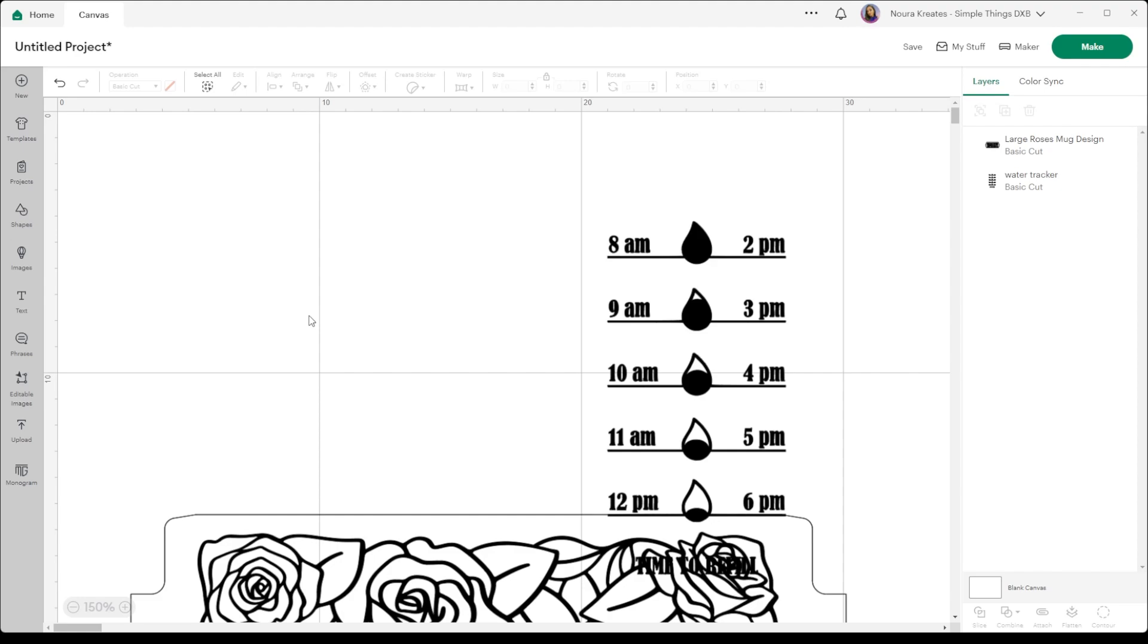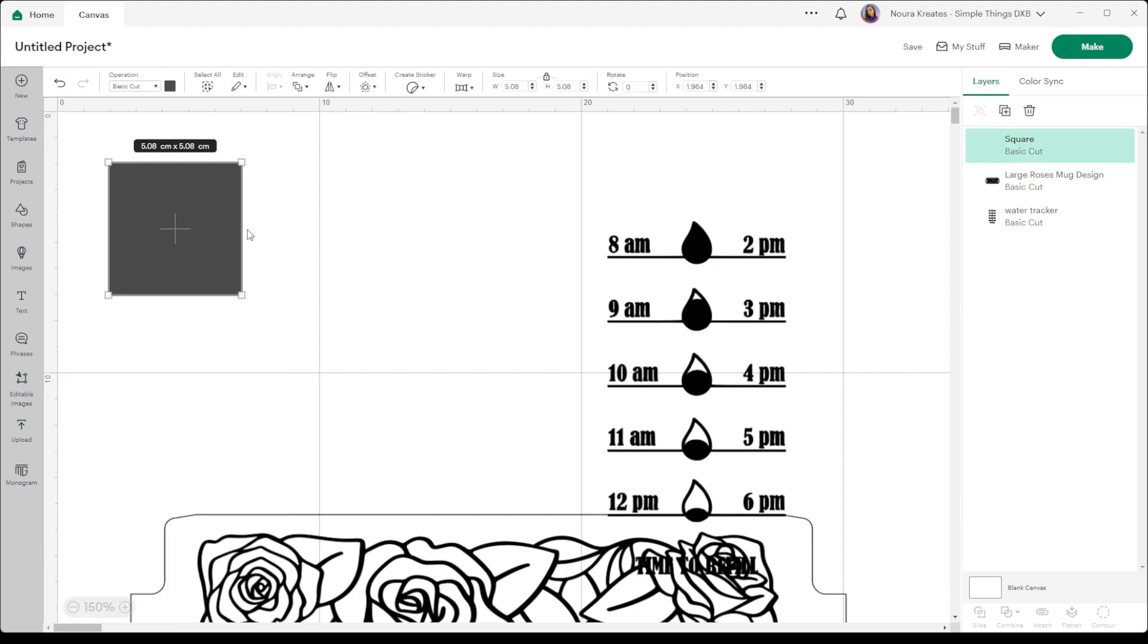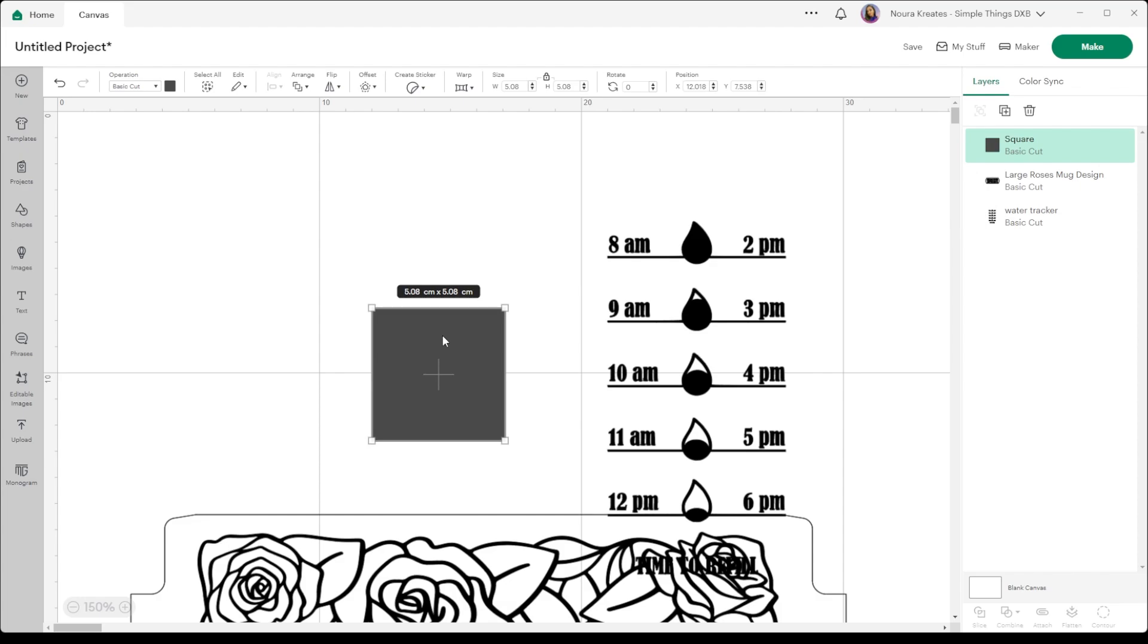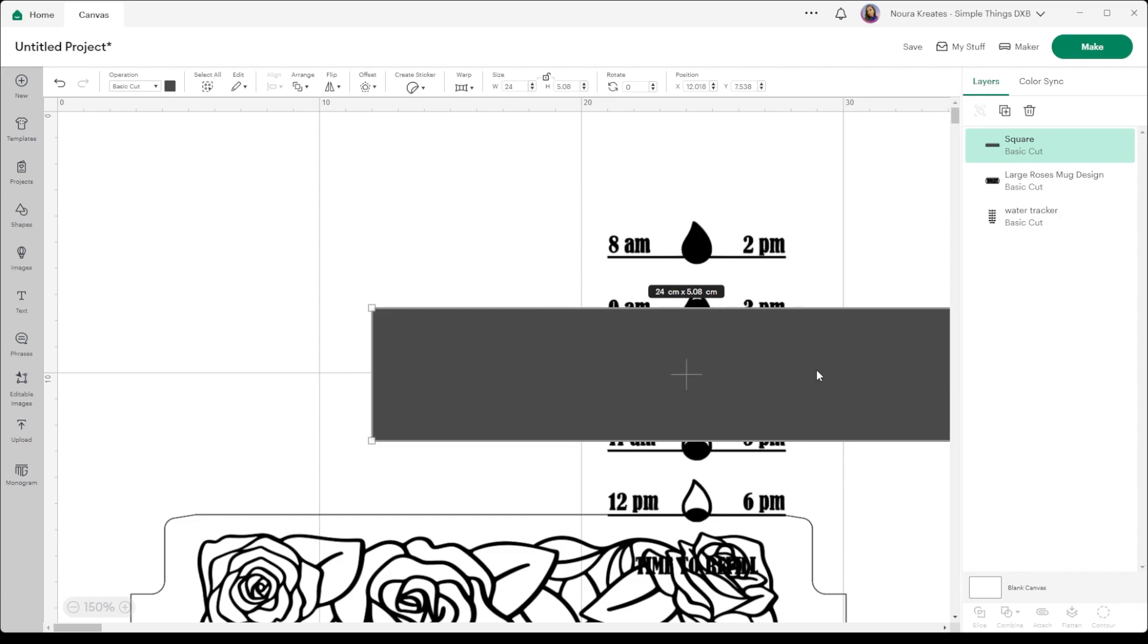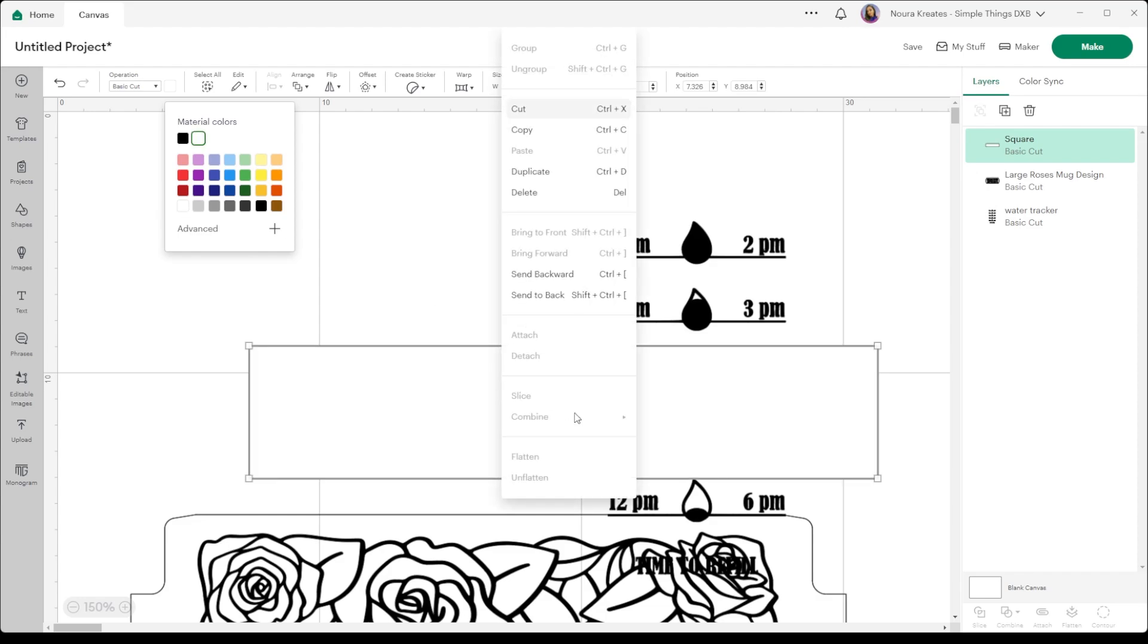The circumference of my bottle is around 24 centimeters, so what I'm going to do is I'm going to grab a square, I'm going to hit unlock, and I'm going to put 24 where the width is. Let me just turn this into white and send it to the back.